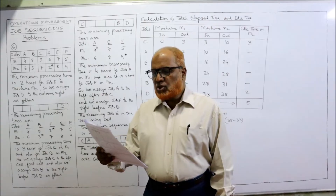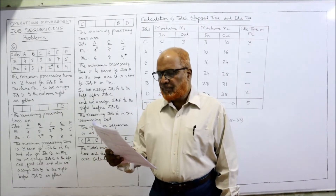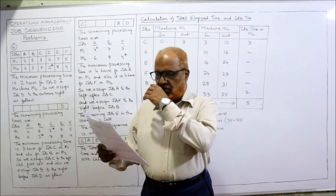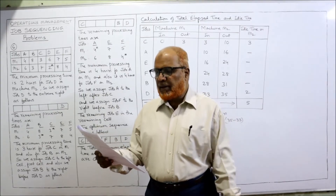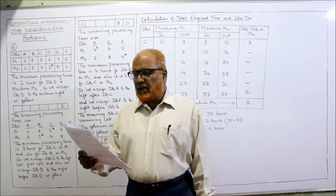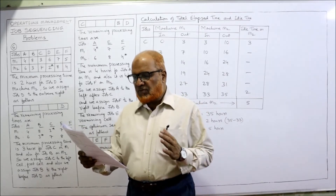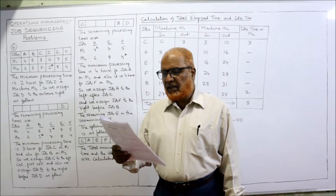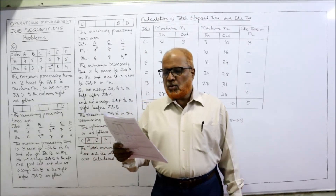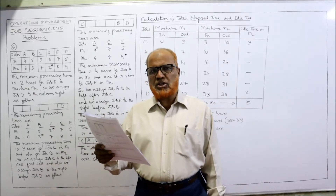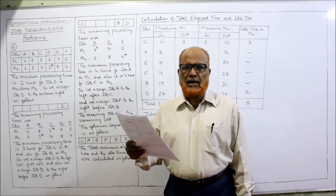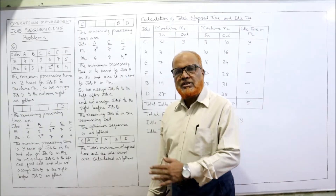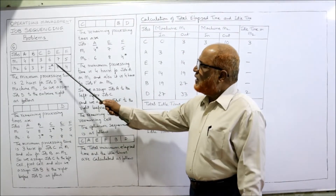Here is the sixth problem: six jobs are to be processed on two machines. The processing time for each job on each machine is given. Find the sequence of jobs that minimizes total elapsed time to complete the jobs, and also calculate the minimum elapsed time. The jobs are to be processed first on machine M1. Two machines are there — M1 and M2 — and six jobs: A, B, C, D, E, F. For example, job A takes four hours on M1 and six hours on M2. All processing times are given similarly.